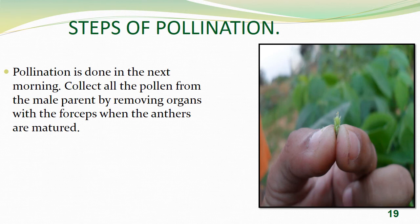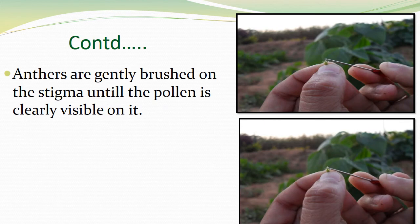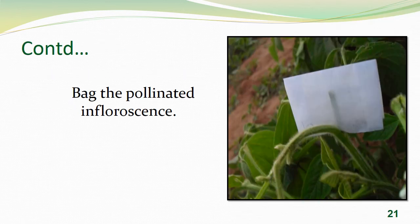Steps for pollination: pollination is done the next morning. Collect all the pollen from the male parent by removing the anthers with a forcep when the anthers are matured. The anthers are gently brushed on the stigma until pollen is clearly visible on it. Then bag the pollinated inflorescence.